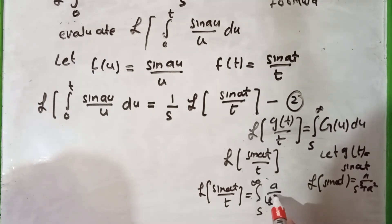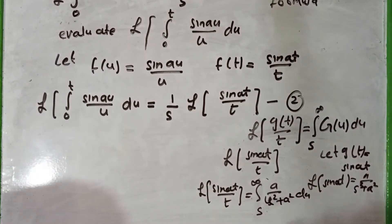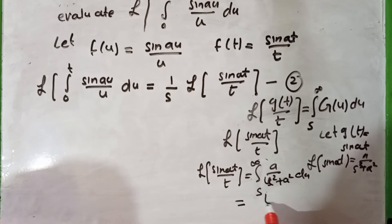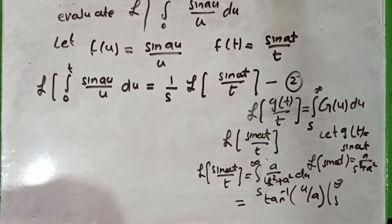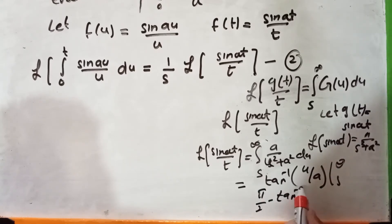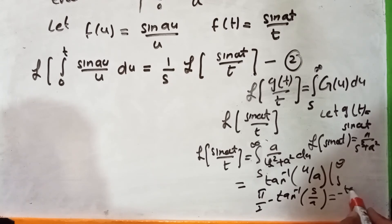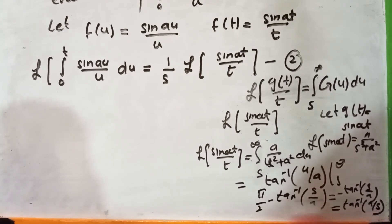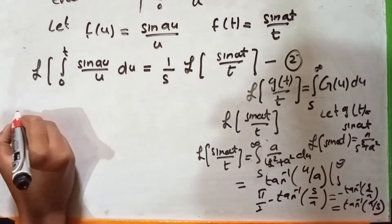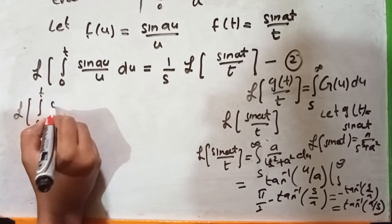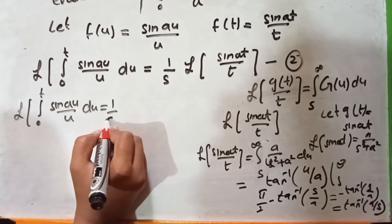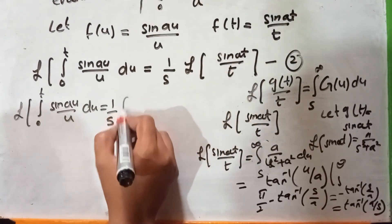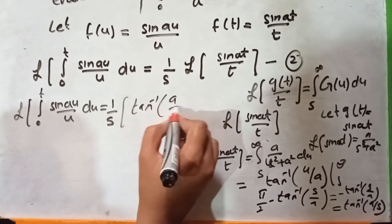So Laplace of sin(at) over t is equal to the integral from s to infinity of a over u squared plus a squared du, which evaluates to tangent inverse of a over s. Therefore equation 2 becomes: Laplace of the integral from 0 to t of sin(au) over u du equals 1 over s times tangent inverse of a over s.